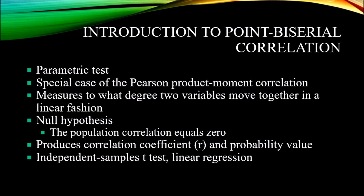Conducting a point-biserial correlation produces two kinds of output. You get the correlation coefficient, which is a measure of the strength of the relationship between the two variables. You also get a probability value. The probability value is compared to the alpha, which is determined before the statistic is completed. The alpha for the social sciences is usually 0.05, or 5%. The probability value tells us the probability that we could make the observation we did based on random error alone, if the null hypothesis is true. If that probability is less than 5%, we reject the null hypothesis.